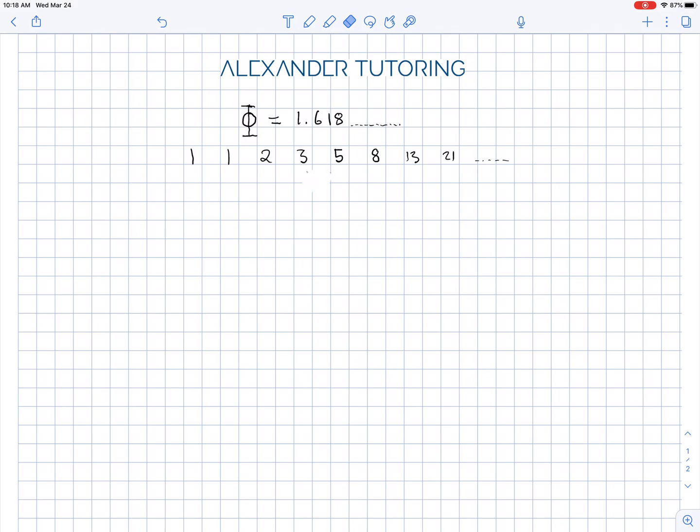Well, it's actually a limit that you get from dividing consecutive terms in the sequence. So what I'm going to do now is divide each term as we go along. So starting with 1 and 1, 1 divided by 1 is 1.